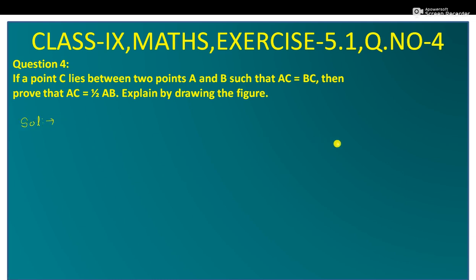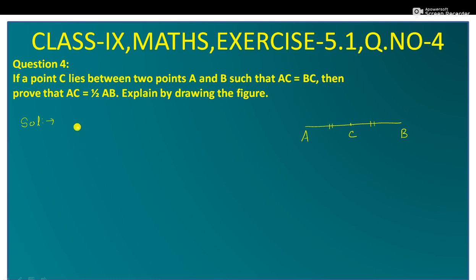Point C lies between two points A and B. हम एक line लेते हैं — A और B. यह A point है, यह B point है, और जो C point है वो दोनों के बीच में है. This is C. इसमें बोला गया है AC is equal to BC — AC part और BC part बराबर है. यह दिया हुआ है, यह given है: AC is equal to BC.